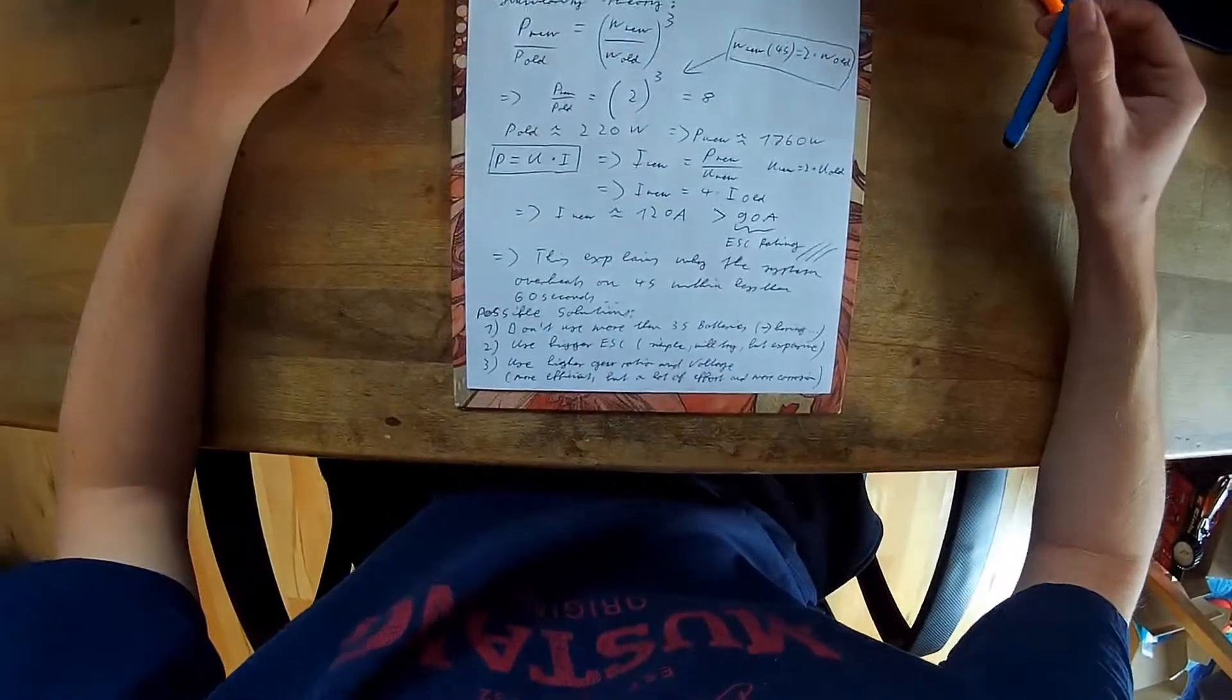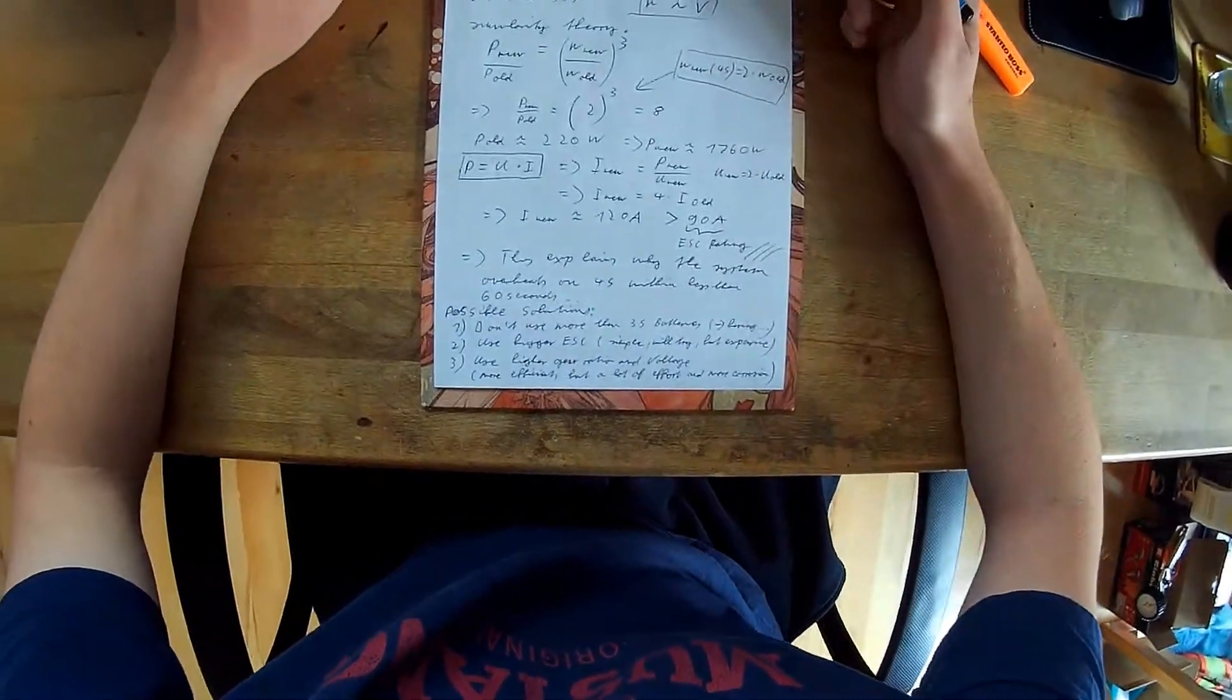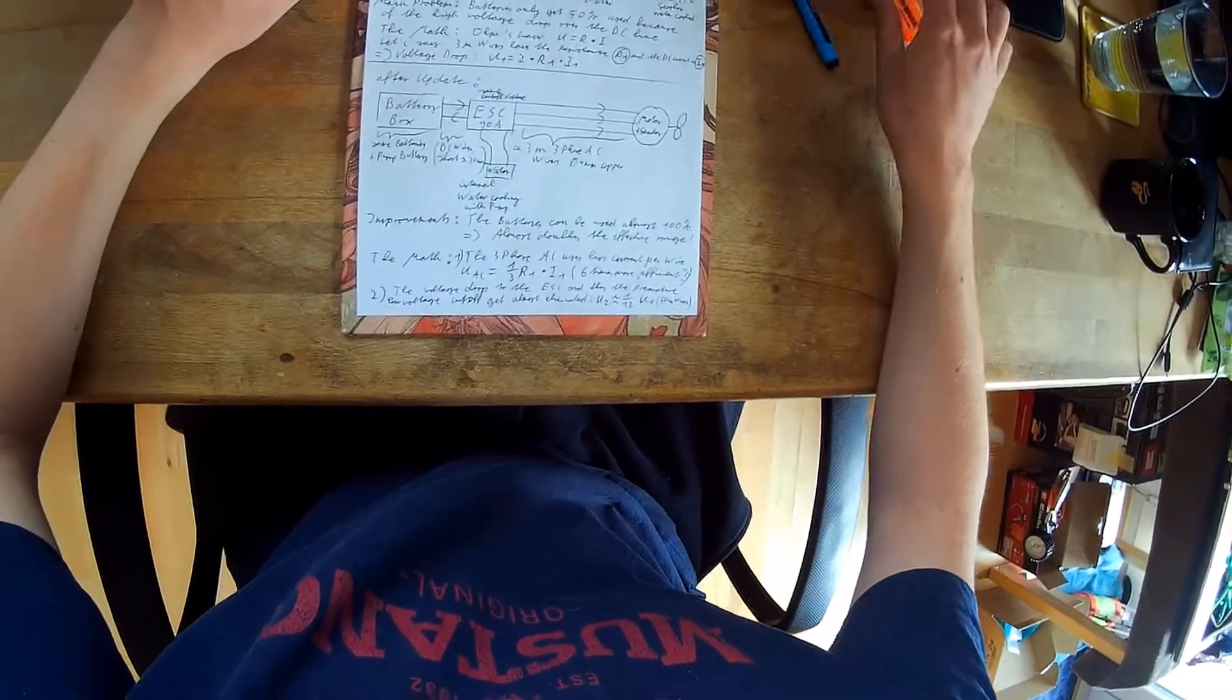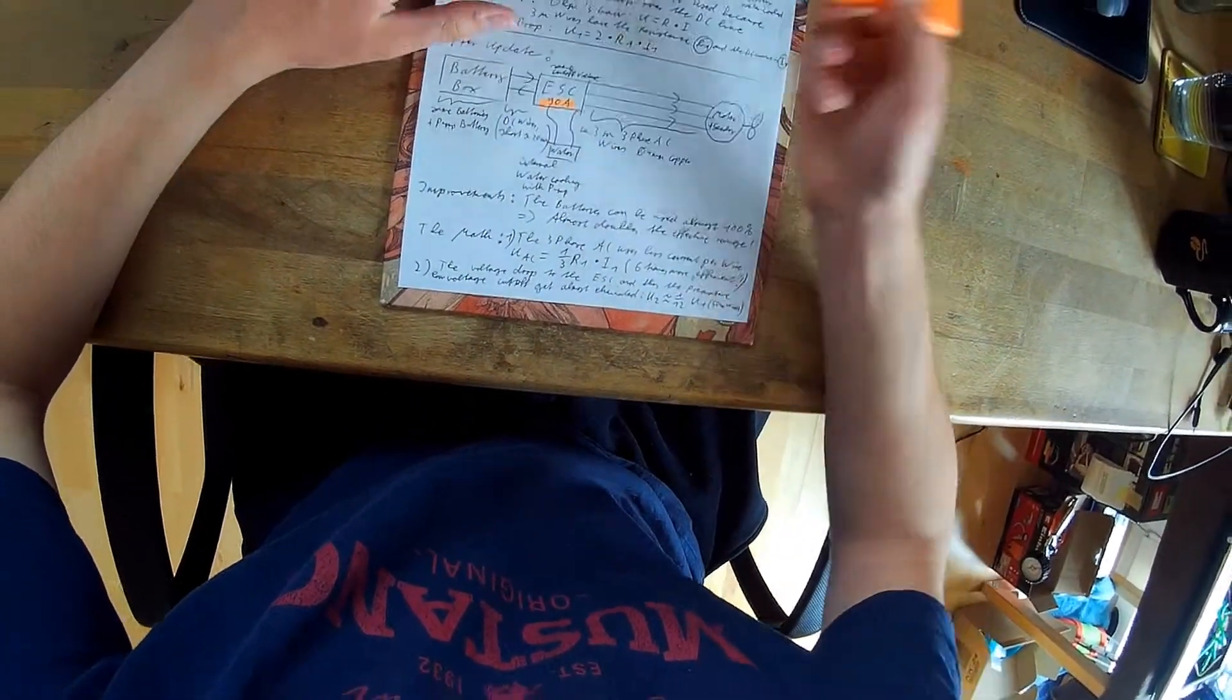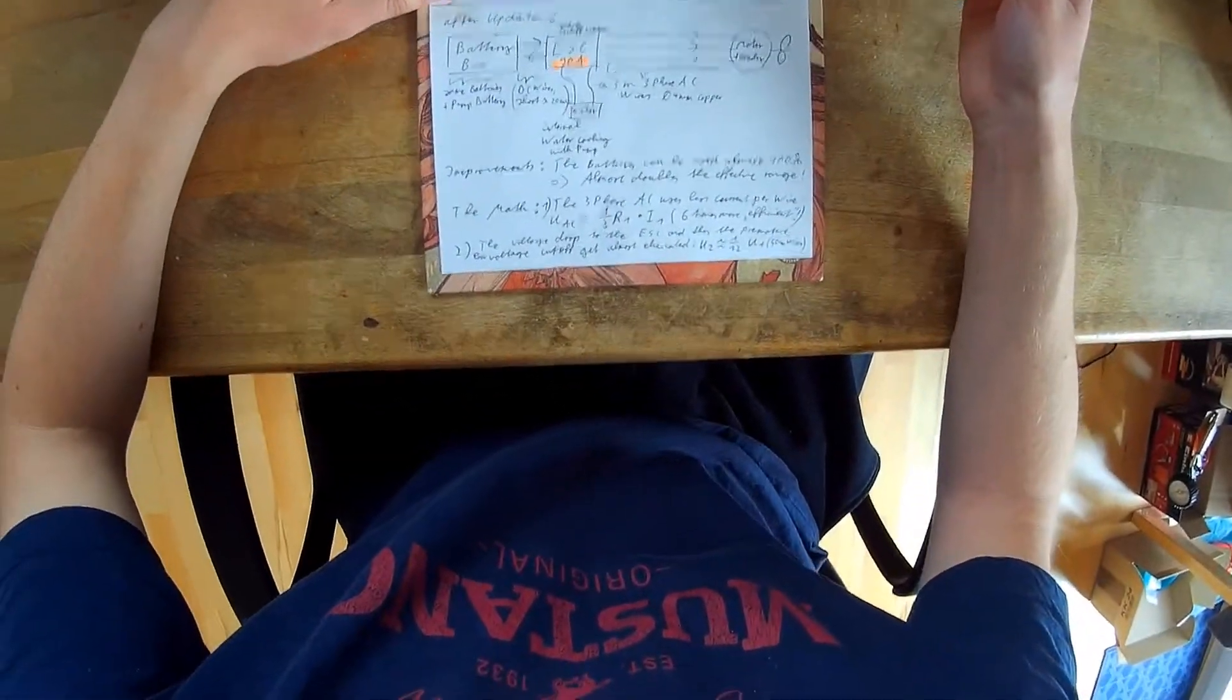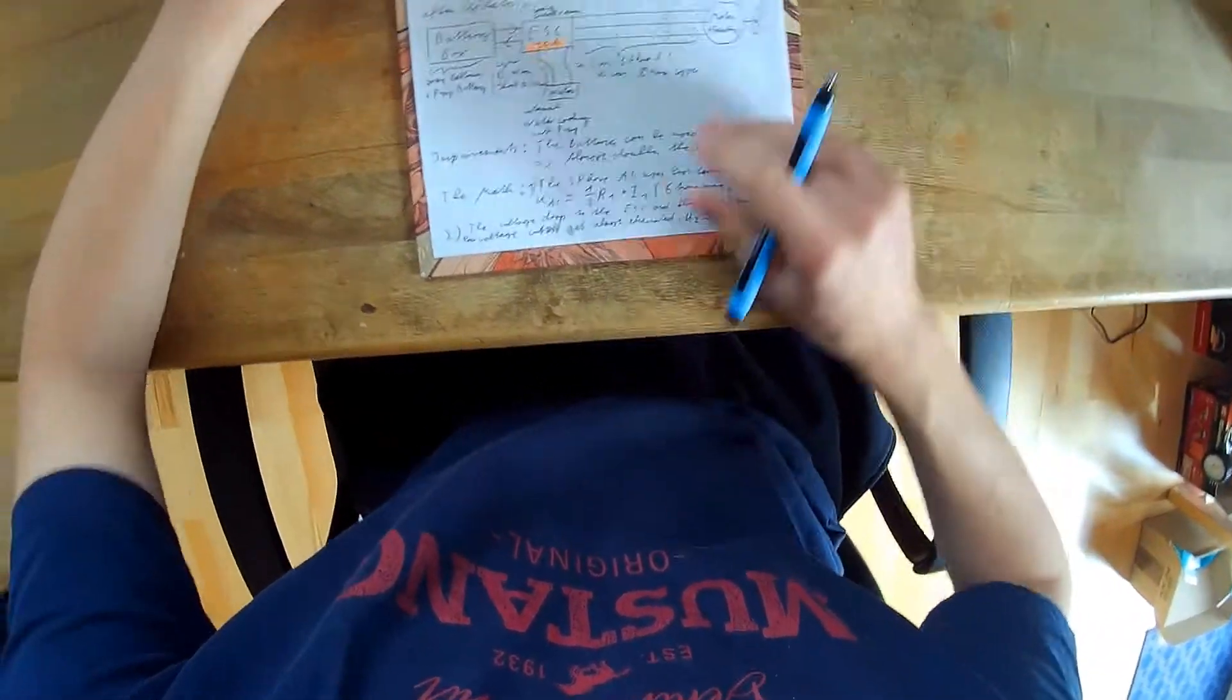The question remains, what is still a challenge? What can be improved in the future? And the main problem with the system now is that we still have the same ESC. So it's only 90 amps. And of course, after the update, it's still only 90 amps. It gets a little bit more current, maybe, but it's still very power-limited.